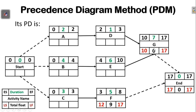Moving from activity G, we go to activities D and E. Both emerge from the same predecessor G, so their late finish time is the late start of G, which is 10. For activity E, late start is 10 minus 6, giving 4, and the float is zero. For activity D, late finish is 10, late start is 10 minus 1, giving 9, and the float is 7.